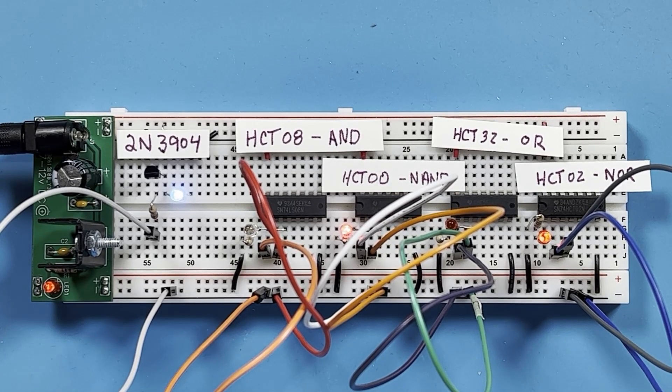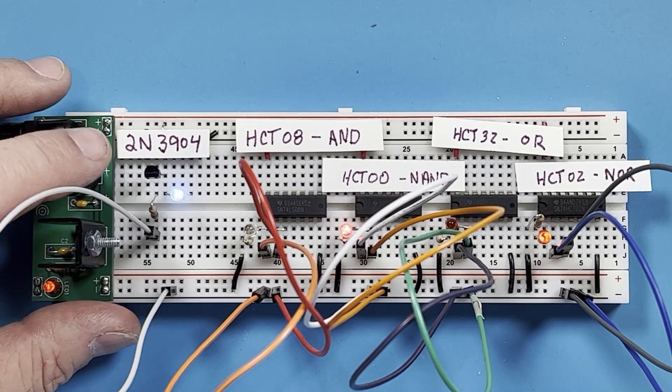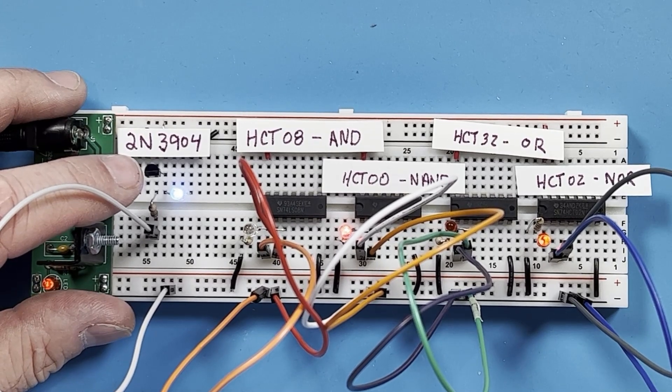Now if you remember in my clock video, I built a clock using an inverter chip. Well what I have here is a transistor, a 2N3904, set up as an inverter.